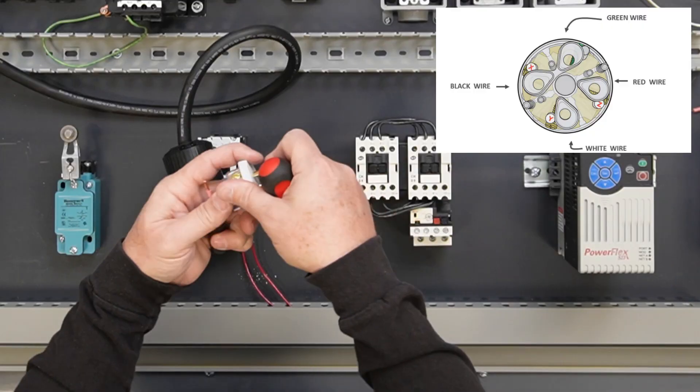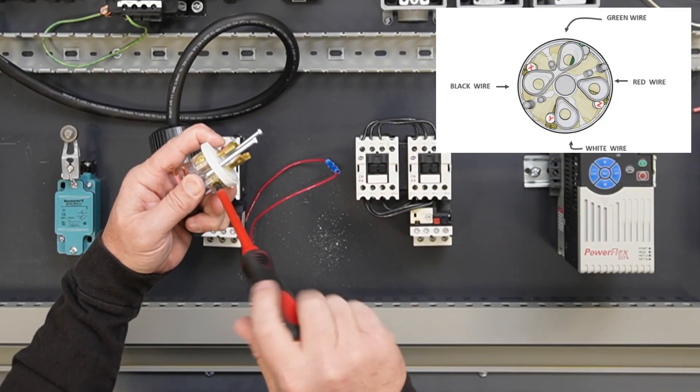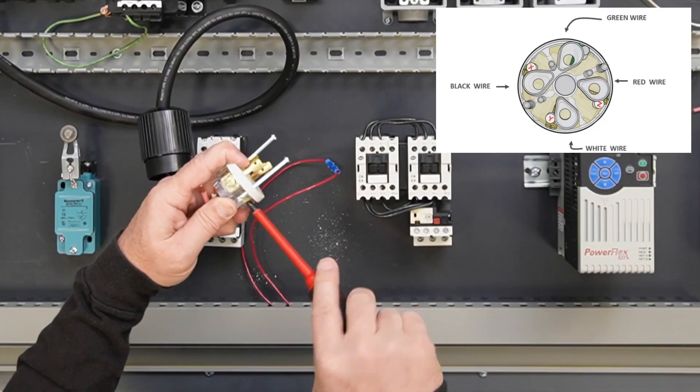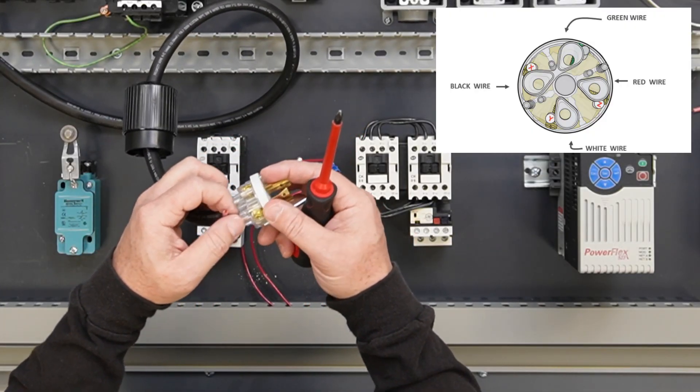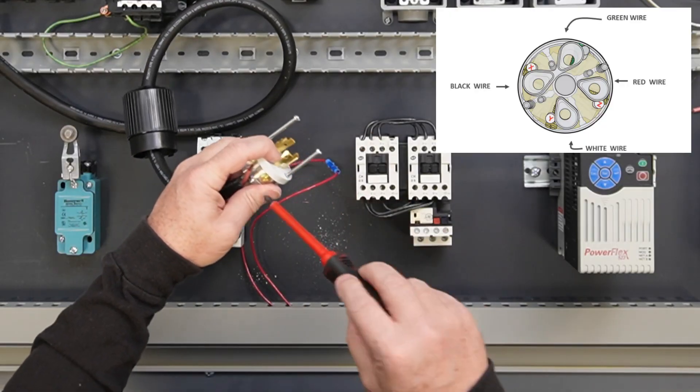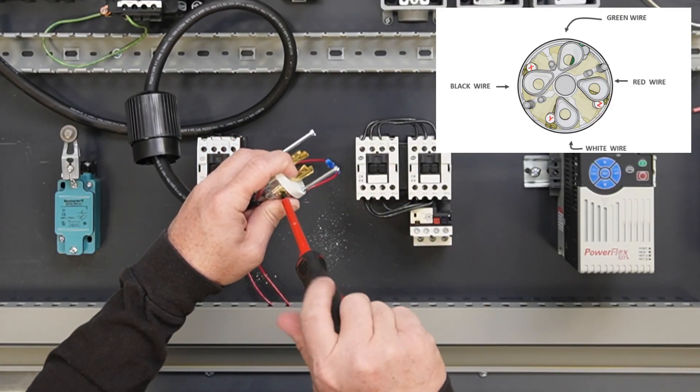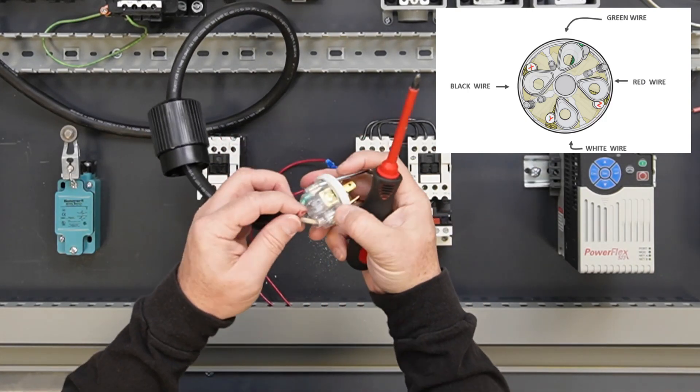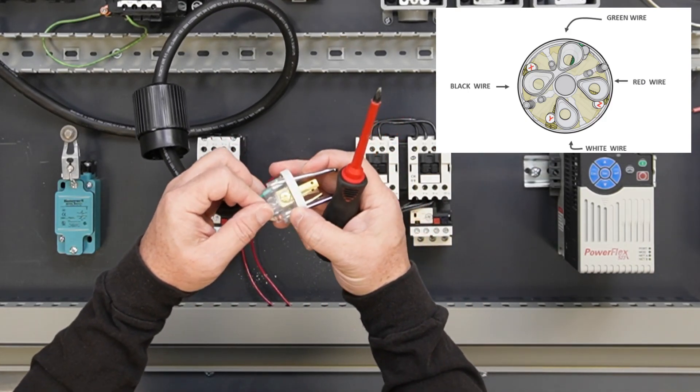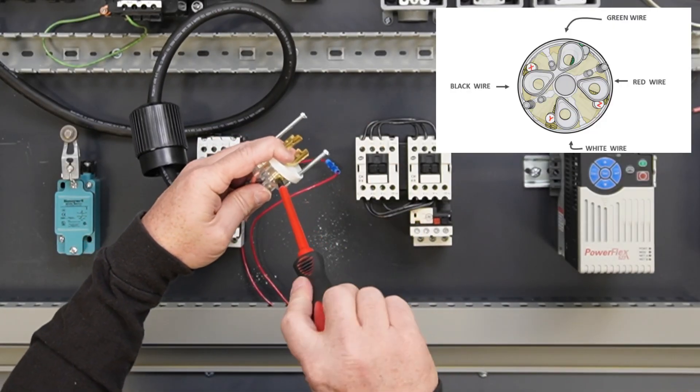Land the black wire on the brass colored phase terminal marked X and tighten to 18 inch-pounds. Land the red wire on the brass colored phase terminal marked Y and tighten to 18 inch-pounds. Land the white wire on the brass colored phase terminal marked Z and tighten to 18 inch-pounds.